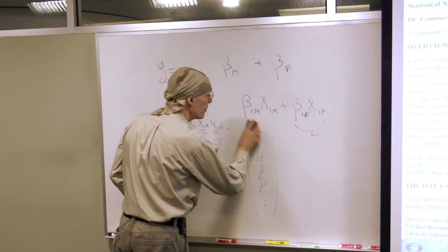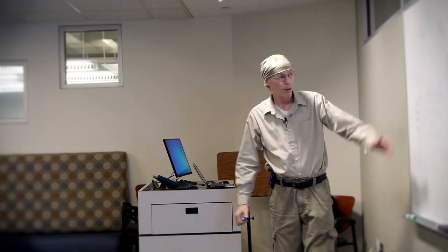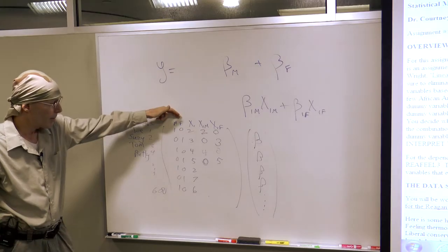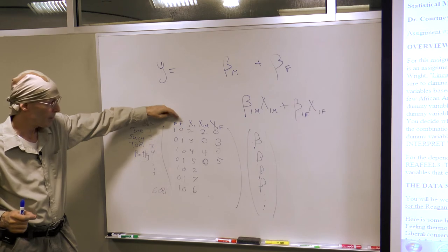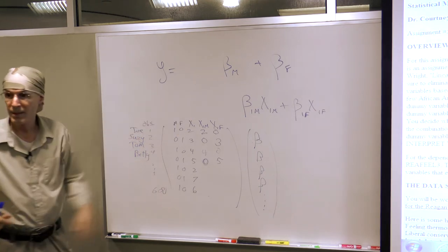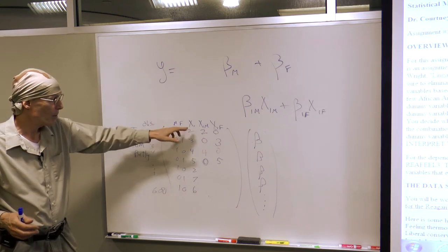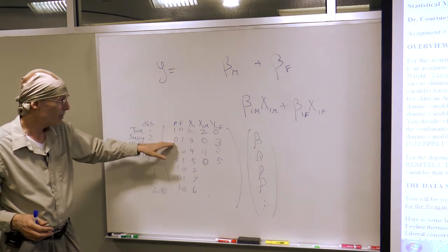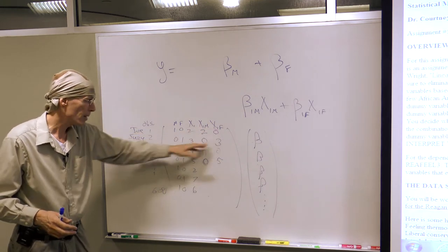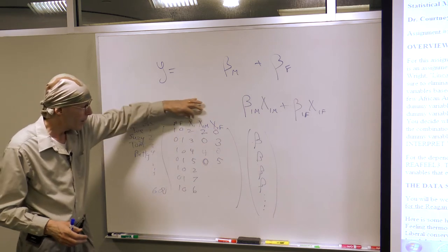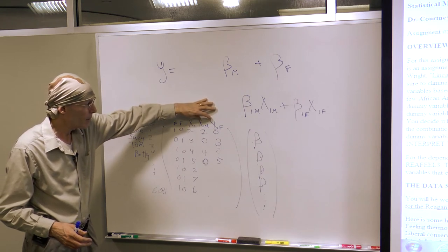Algebraically it's really easy. We already have a column of ones and zeros for men and women. If we simply multiply those intercept dummy variables — male and female — times our value for X1, then whenever it's a man, the value for X1 will appear; for a woman it won't appear in the male column. By multiplying the intercept dummies times the variable of interest, you create X1 for men and X1 for women.